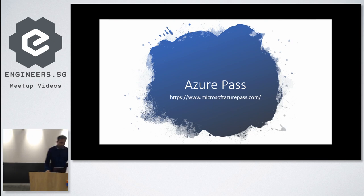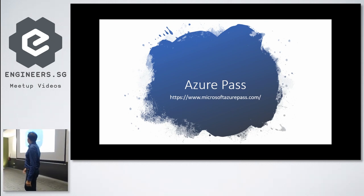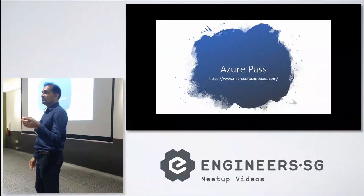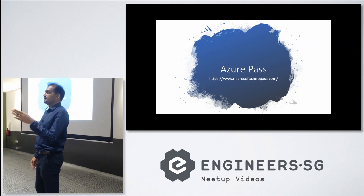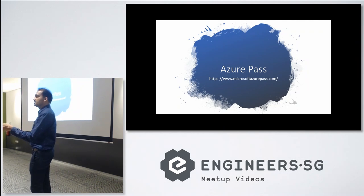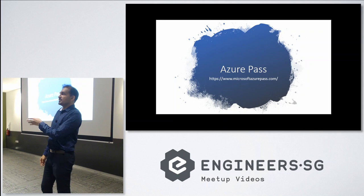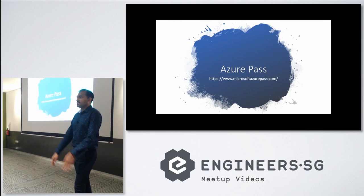Those who are willing to do the workshop should register the Azure pass that was provided. The pass has a $100 USD credit. The credit starts to run from the time you register and it is valid for one month. So even if you don't use it, after one month it is gone — $100 USD for one month, and you can use whatever you can run within that.